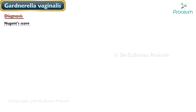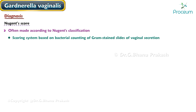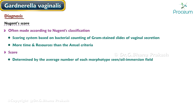The Nugent score is another diagnostic method for bacterial vaginosis, based on Nugent's classification — a scoring system based on bacterial counting of gram-stained slides of vaginal secretion. This takes more time and resources than the Amsel criteria, so it is mostly used in a research setting. The score is determined by the average number of each morphotype seen per oil-immersion field, but varies with the type of bacteria.